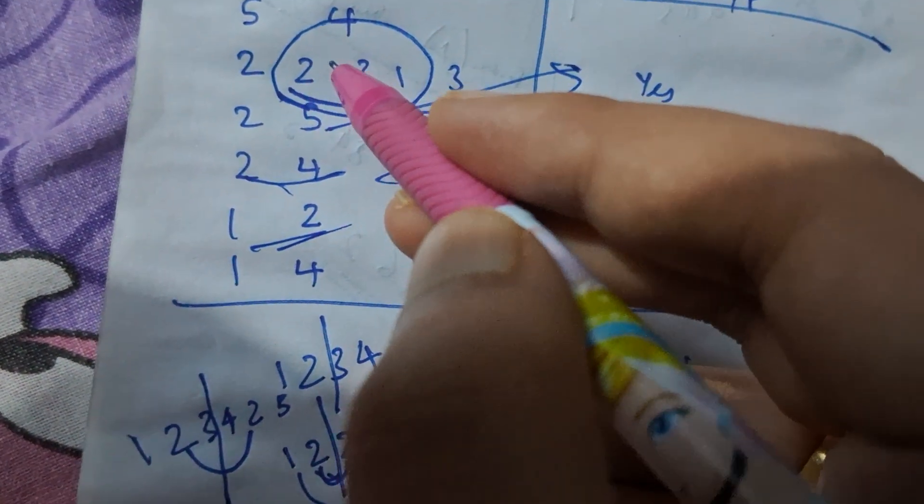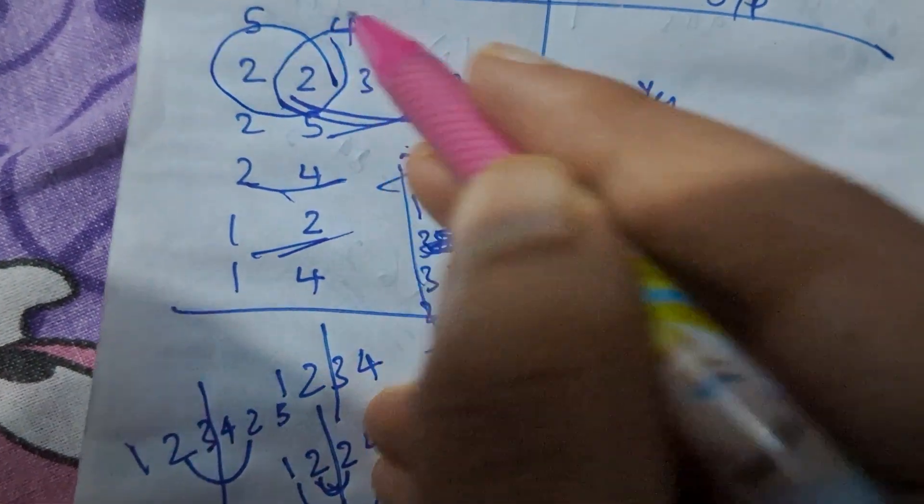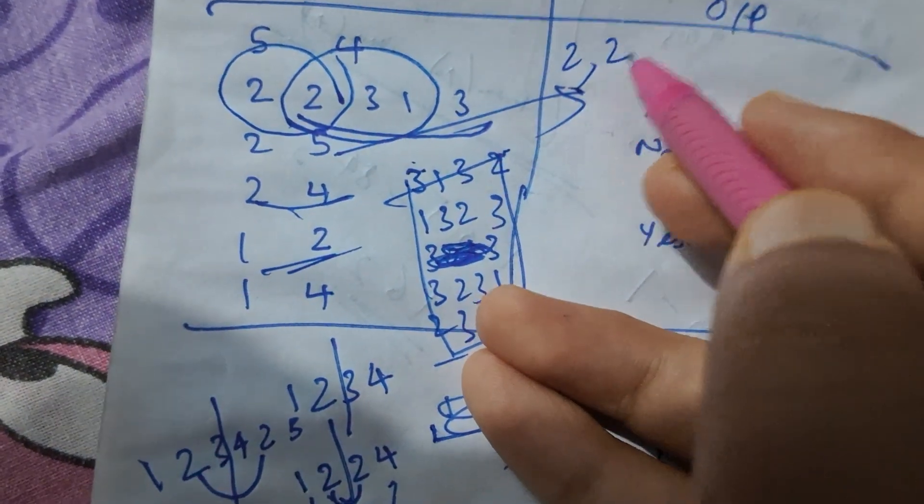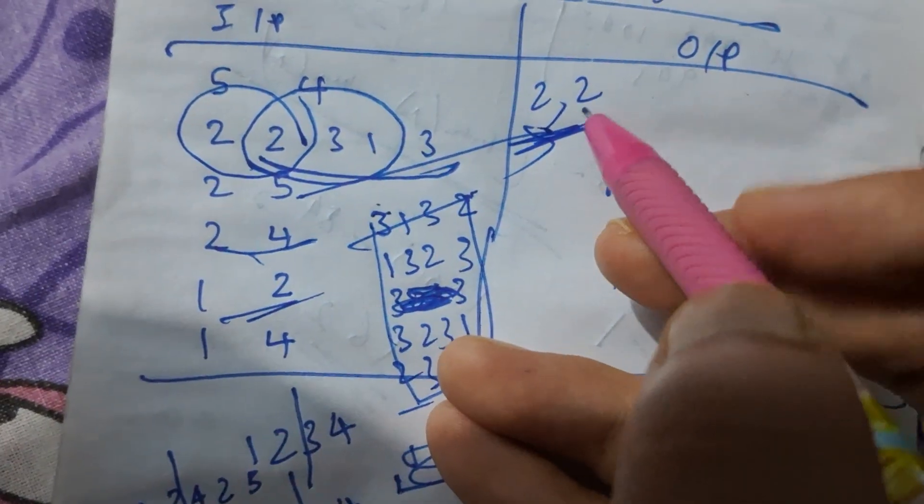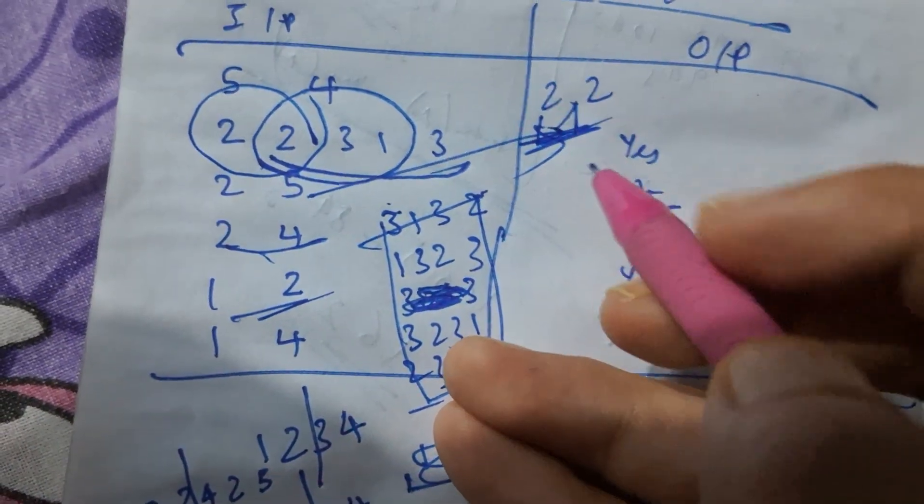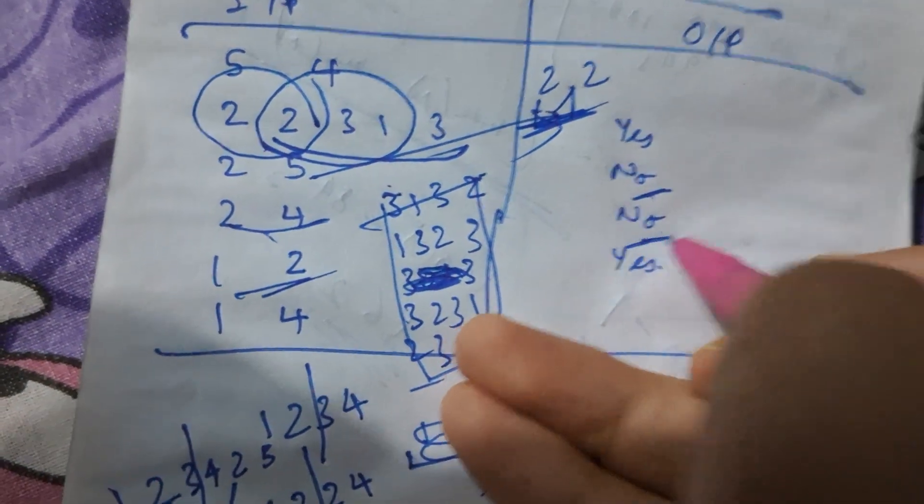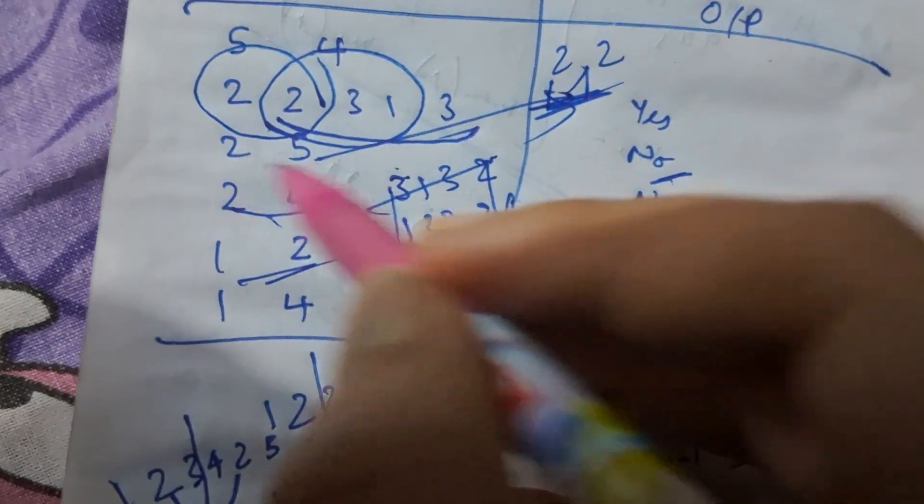And for 1,2, it will be 2,2. No matter how you rearrange it, 2,2 will be 2,2 only. So basically that means it is always palindromic, so that is also a no. And for 1,4 you can see that...